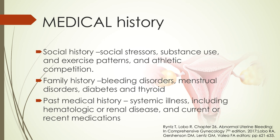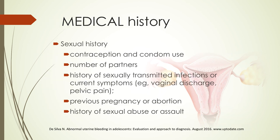Ask about family history of bleeding disorders, menstrual disorders, diabetes, and thyroid disease. Ask about past medical history including systemic illnesses such as hematologic or renal disease and current or recent medications. Ask about sexual history, especially contraception and condom use, number of sexual partners, history of STDs, history of previous pregnancy or abortion, and history of sexual abuse or assault.